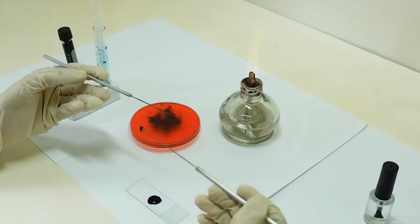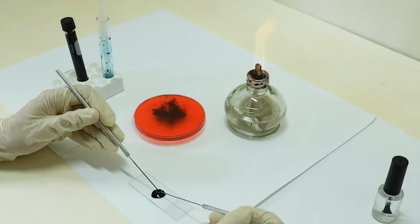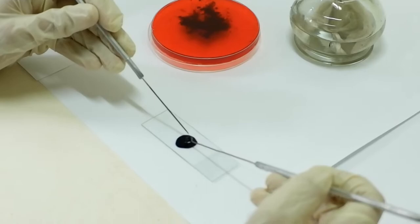Place the fungal portion in the LPCB and with your second needle, tease apart the hyphae so that they form a thin layer.